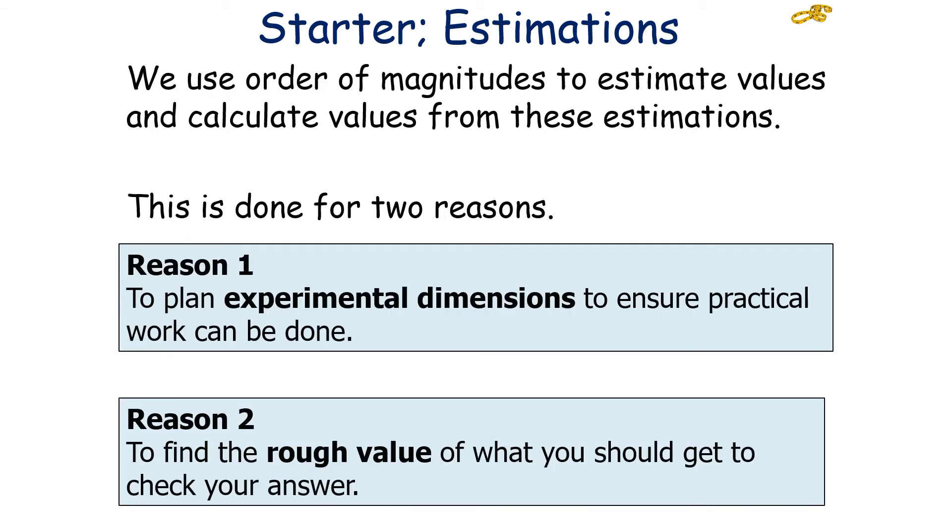We can use orders of magnitude to estimate values and calculate values from these estimations. This is done for two reasons. Reason 1 is to plan experimental dimensions to ensure practical work can be done, and reason 2 to find a rough value of what you should get to check if your answer in a question is correct.